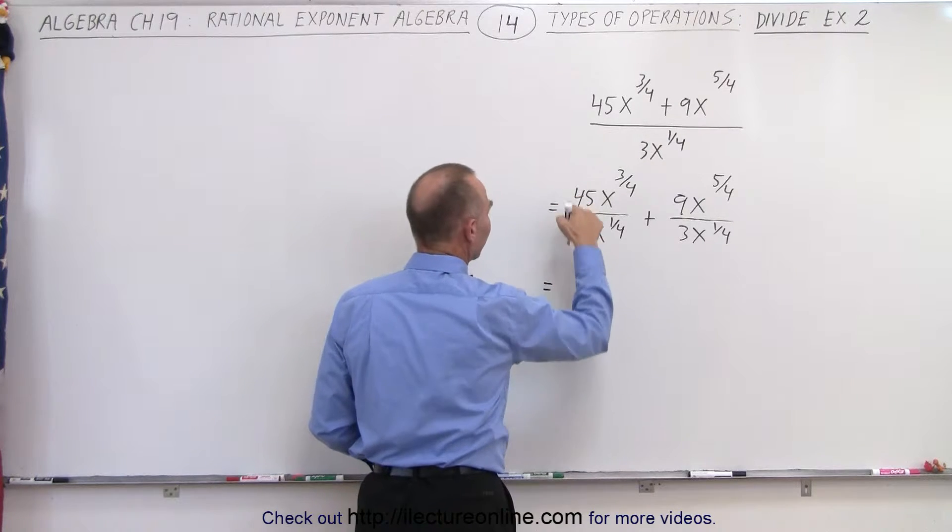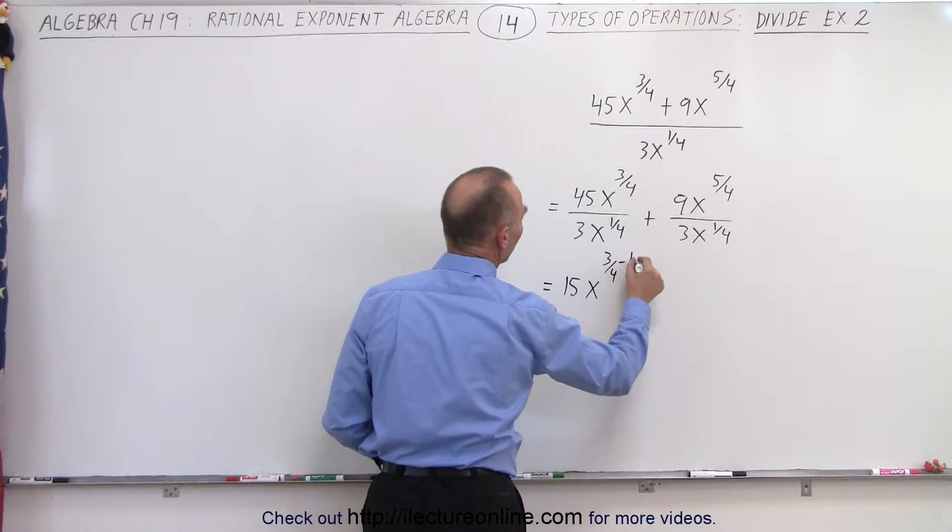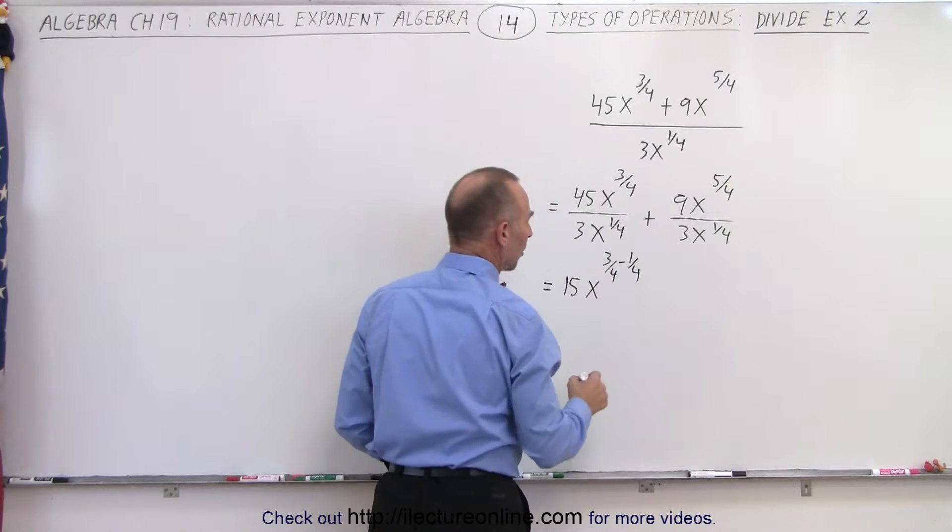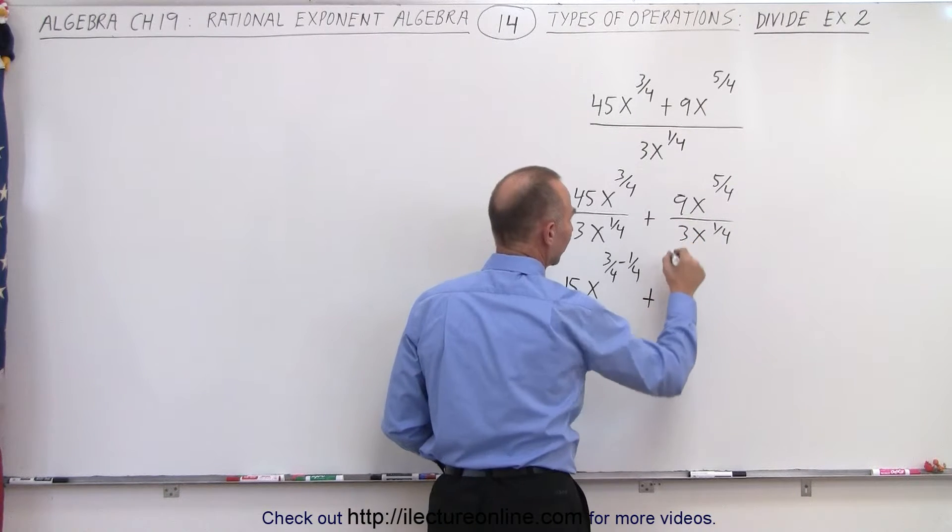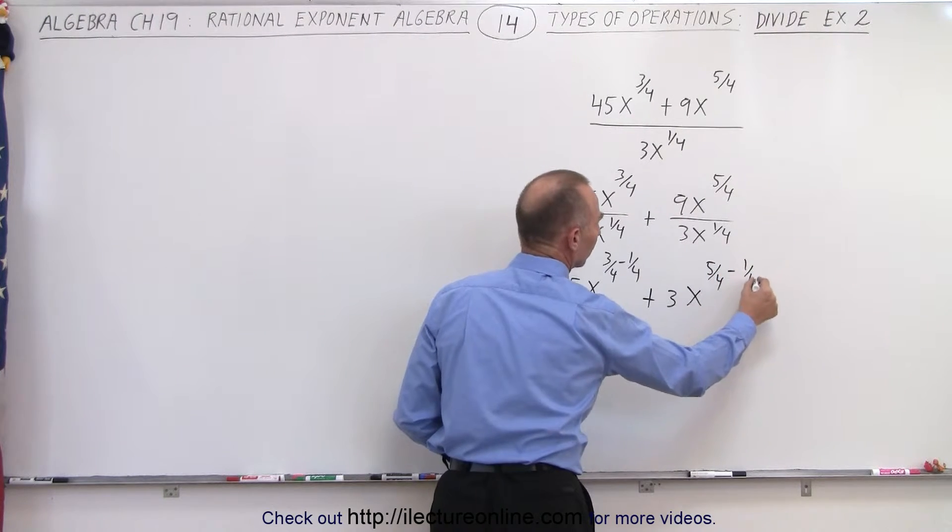This is equal to 45 divided by 3, which is 15, x to the 3 quarters minus 1 quarter. When you divide and the base are the same, we subtract the exponents. Plus 9 divided by 3, which is 3, x to the 5 quarters minus 1 quarter.